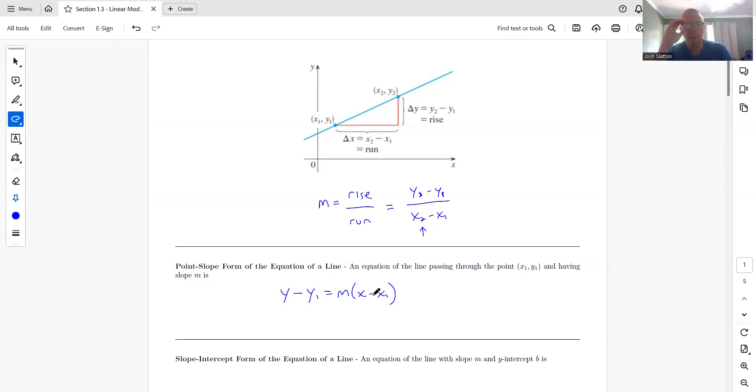We could write this equation as y minus y1 equals m times x minus x1. And so really what this is, we could rearrange this. If we divided both sides of this equation by x minus x1, that would cancel on this. Over here, we'd have y minus y1 over x minus x1 would equal m.